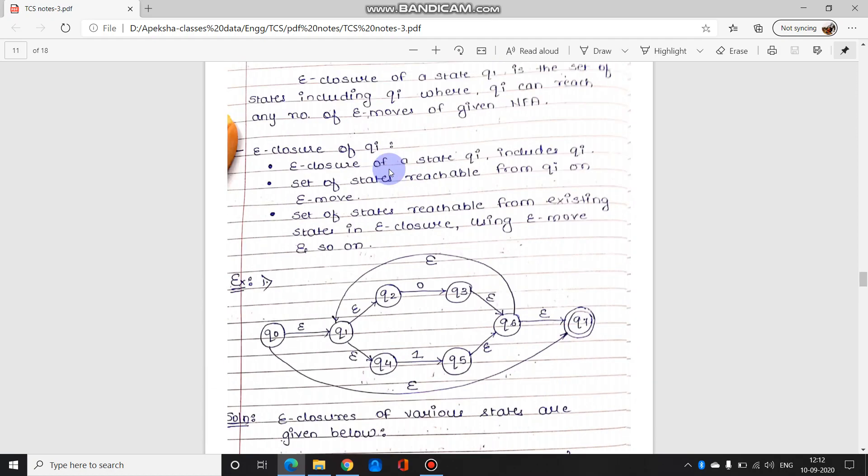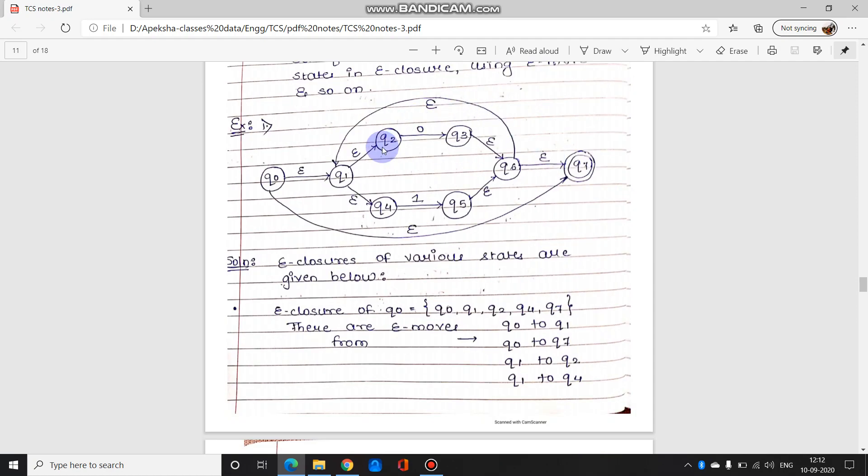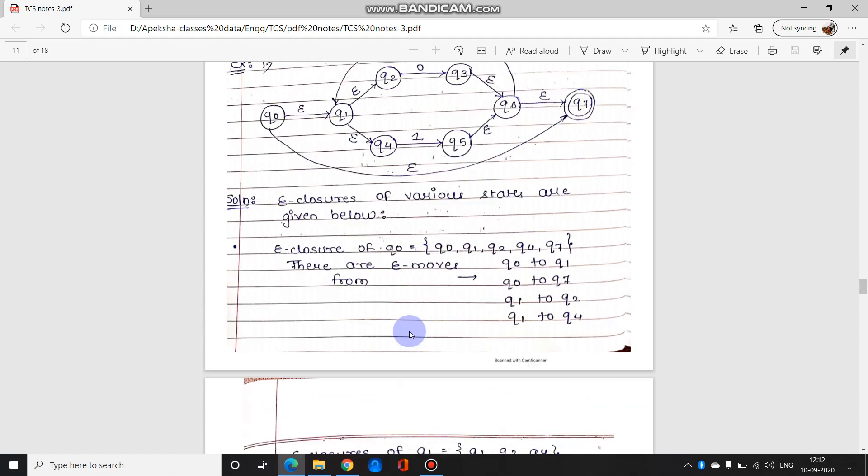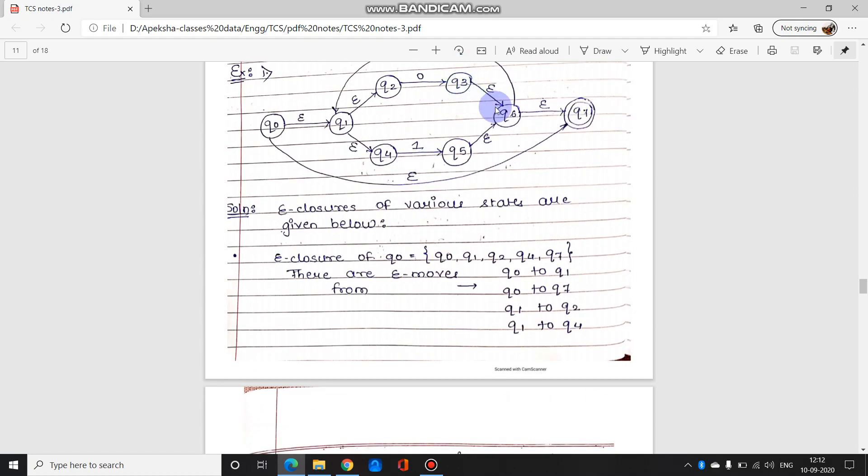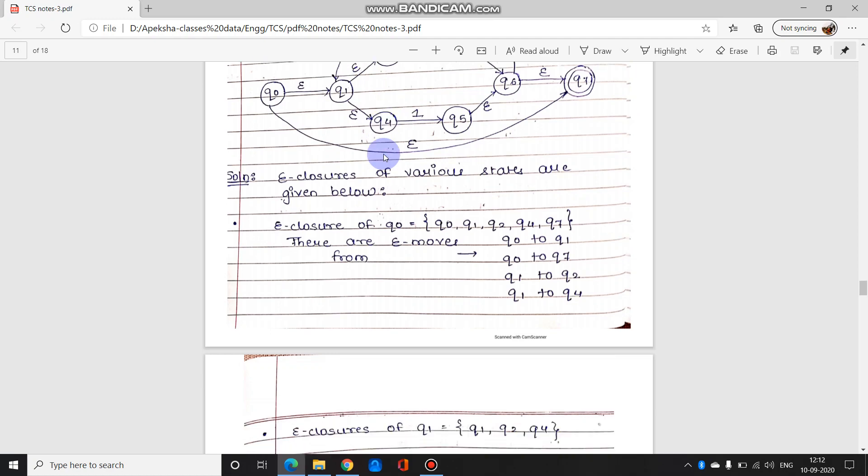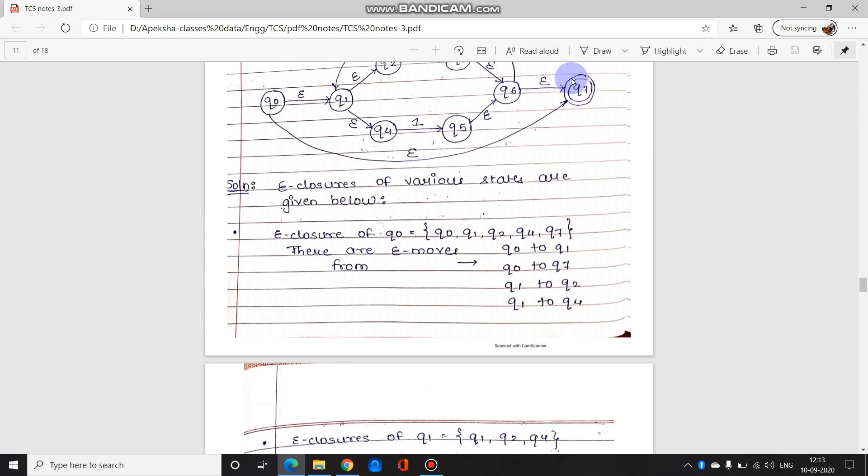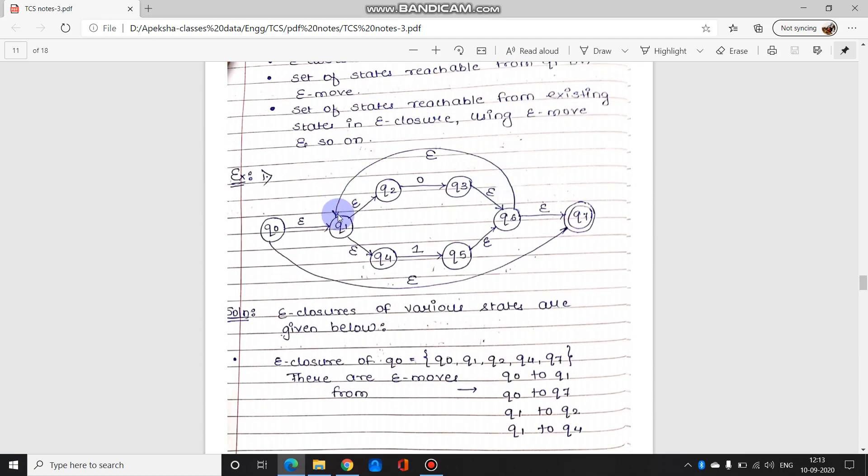E-closure of Q3. Now if you see Q3 se Q6 ja raha hai, Q6 se Q1 ja raha hai, Q1 se Q2, Q1 se Q4 ja raha hai wapas. So e-closure of Q3 will be Q3, Q6, Q7, Q2, Q4. See why it is like that: Q3, Q6, Q6 se wapas Q1, Q1 se Q2 and Q4.